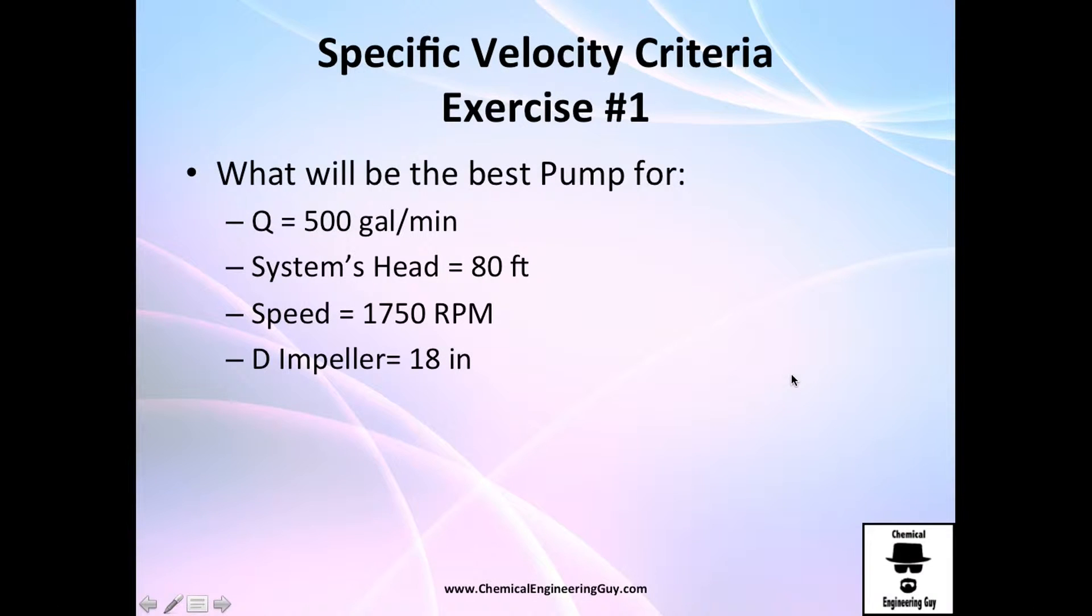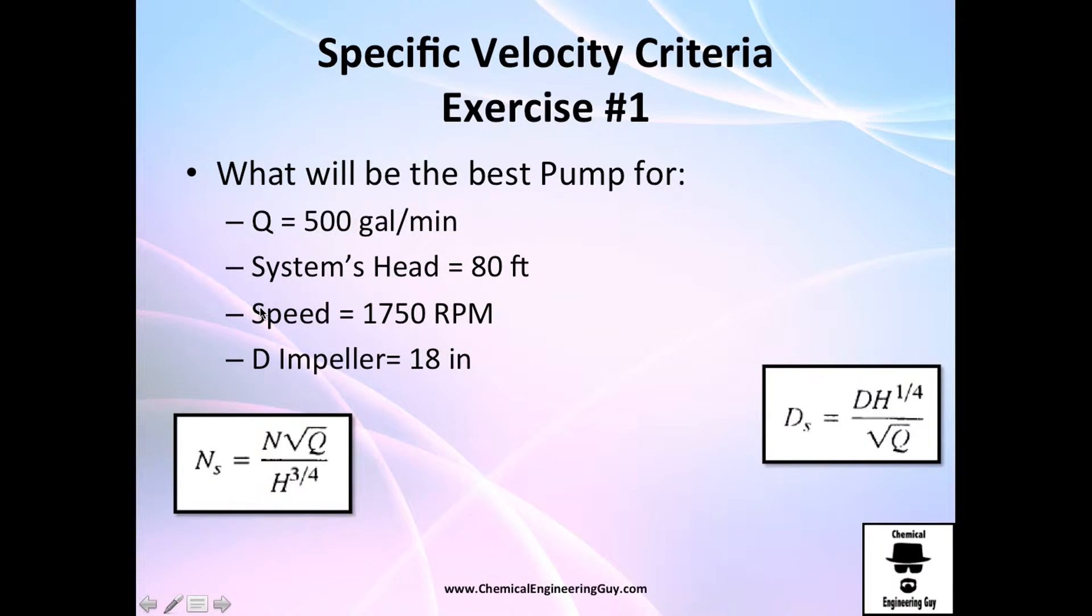So for exercise number one, I want you to find the best pump for this process, which is 500 gallons per minute. The system head is about 80 feet and the velocity of the impeller is 1750 revolution per minute. The size of the impeller is 18 inches. So what we need to do is essentially just plug the numbers in and be sure to use RPM here, gallons per minute here, and the head use feet. Here use inches.